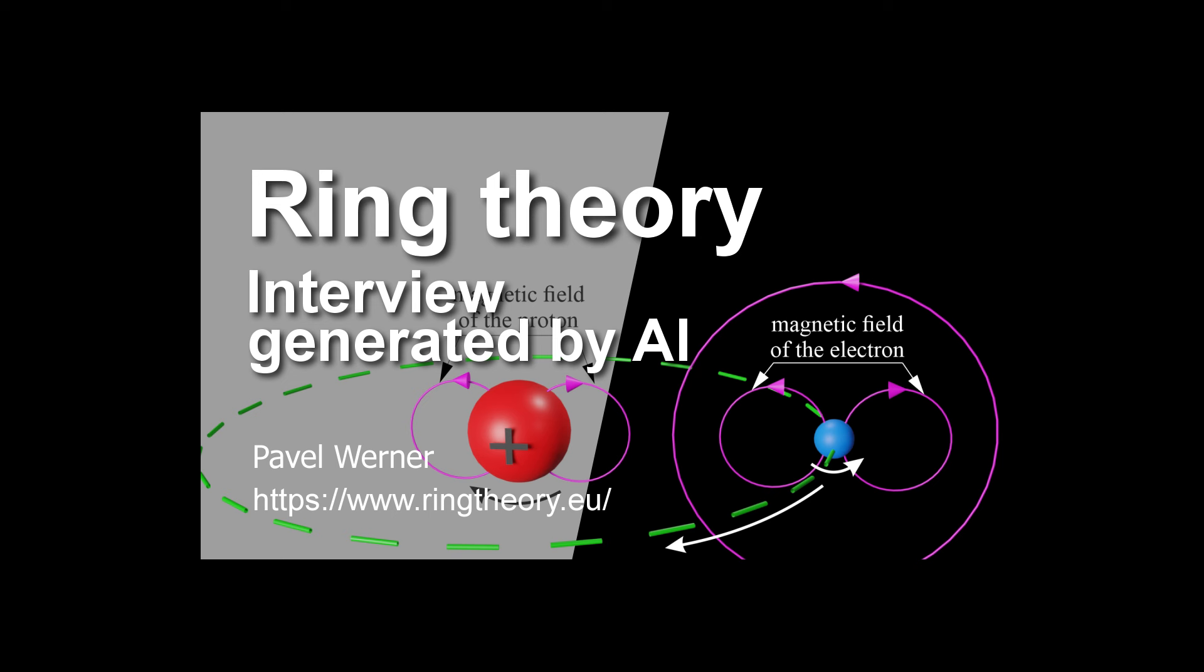Wait, so instead of just a random scattering of these ring-shaped particles, they're actually forming these little gangs, these globules. Exactly. And the size of the gang, so to speak, is limited by how closely those rings can pack together due to their magnetic fields. So it's like this delicate balance, right? Too close, and the magnetic fields push them apart too far, and they're not strong enough to hold them together. Exactly. It's like they're all trying to find their perfect spot in this subatomic mosh pit.